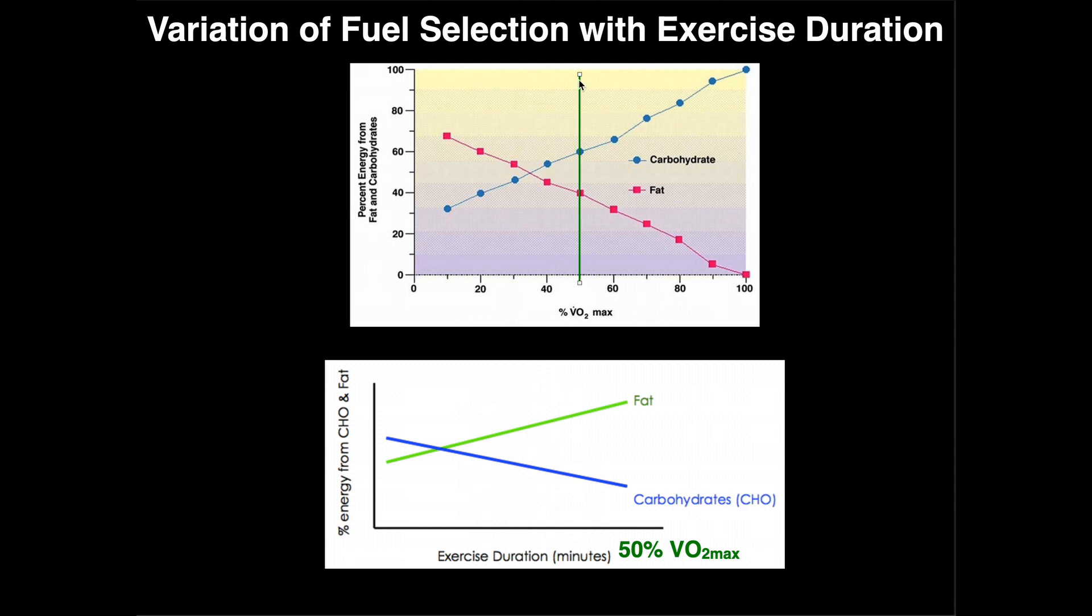We're gonna look right here at 50% VO2 max. Forgetting the exact percent contributions, notice that at 50% VO2 max this individual is relying a little bit more on carbohydrates and a little bit less on fats for energy.